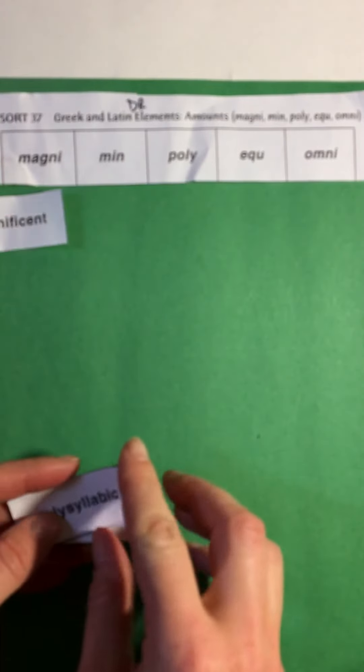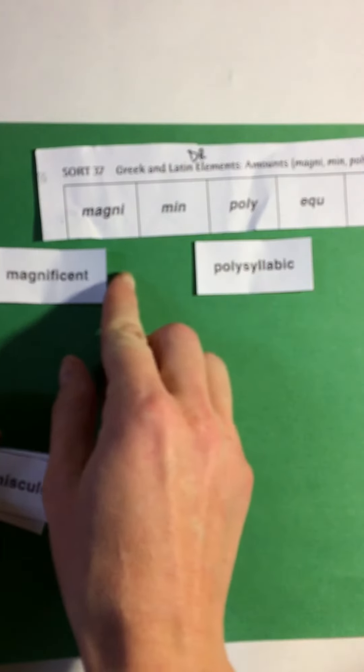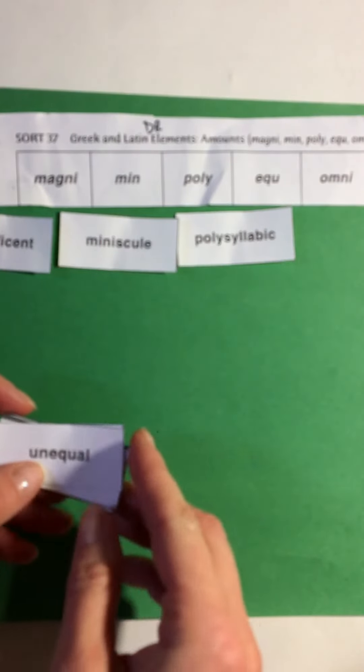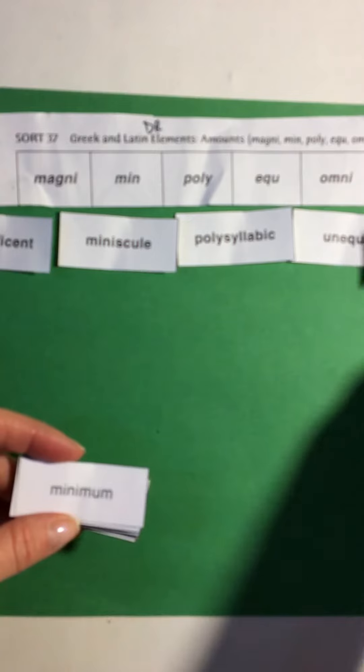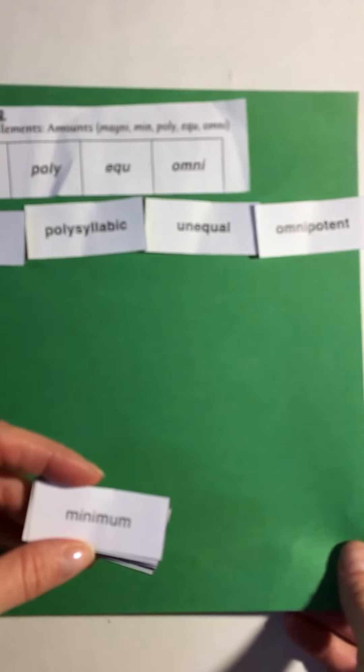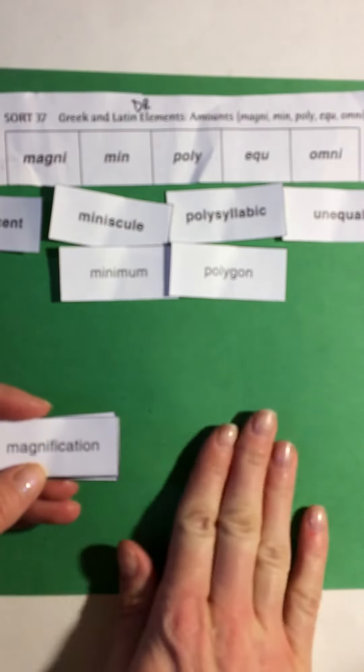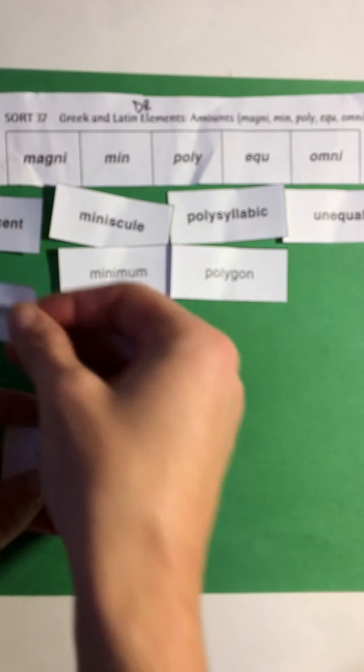Magnificent, polysyllabic. You know I should put this the other way. Minuscule, that could be an idea what mini might mean. Unequal, omnipotent, there we go. I know you're not going to see all of that but we'll move it back and forth. Minimum, polygon, magnification. That is a long word. I think this is polysyllabic. Equitable, polyglot.